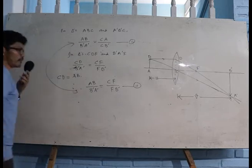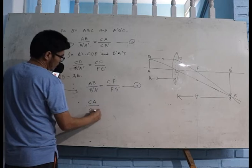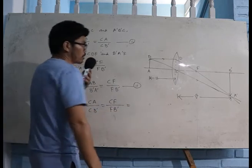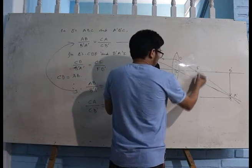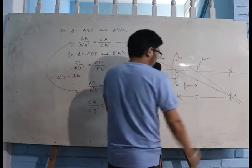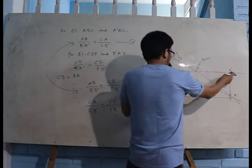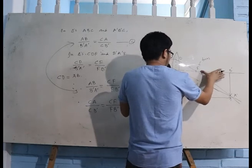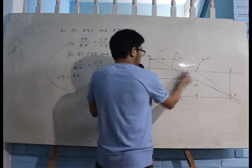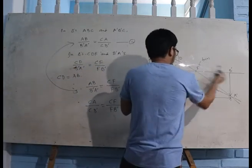Looking at these two equations one and two, the left-hand sides are equal, so the right-hand sides must also be equal. So we write: CA divided by CB' is equal to CF divided by FB'. Now to find FB', we note that FB' equals CB' minus CF.